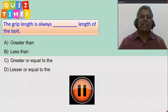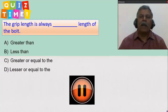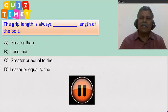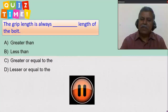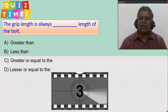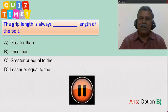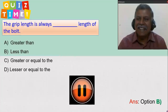The question for you is: the grip length is always dash the length of the bolt. You have four choices — press the pause button, go through the answers, note your answer. Option B is the correct answer.